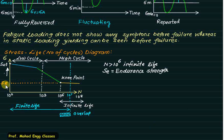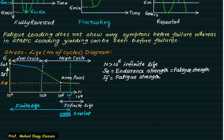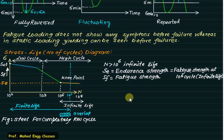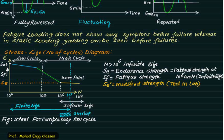The corresponding stress value at 10^6 cycles is called the endurance strength SE. On the y-axis, this stress is called fatigue strength or flow stress. If the fatigue strength equals the value at 10^6 cycles, i.e., the flow stress attains SE, then the component has infinite life.